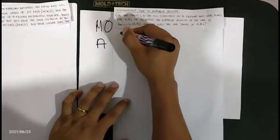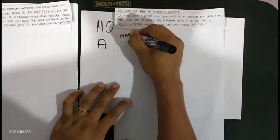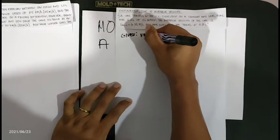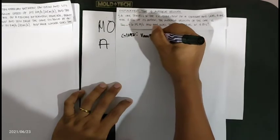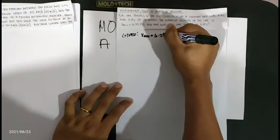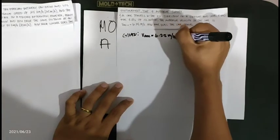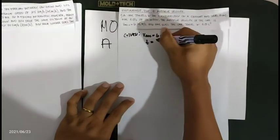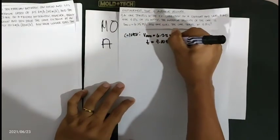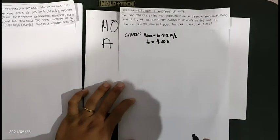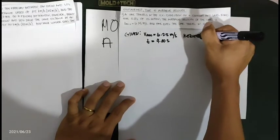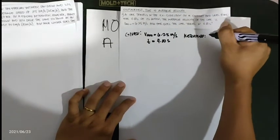First, we are going to identify the given. The average velocity is equal to 6.25 meters per second, and the time is 4.00 seconds. What is required? The required is x, the displacement.